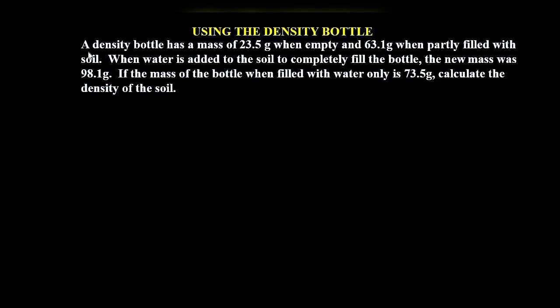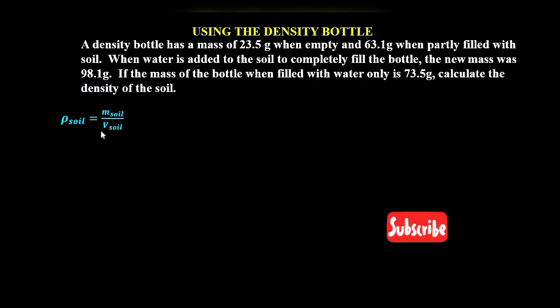Welcome to today's presentation. The question is on how to use the density bottle to determine the density of a given solid. The question reads: a density bottle has a mass of 23.5 grams when empty and 63.1 grams when partly filled with soil. When water is added to the soil to completely fill the bottle, the new mass was 98.1 grams. If the mass of the bottle when filled with water only is 73.5 grams, calculate the density of the soil. Density of soil is obtained as mass of soil over volume of soil.